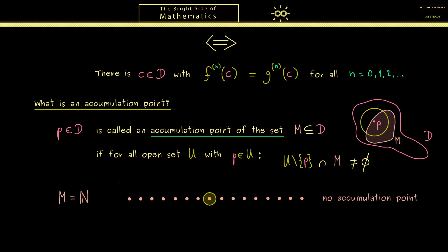However, it can happen that such a discrete set has accumulation points. For example, the set 1/n accumulates around the point 0. This means the point 0 is an accumulation point of the set M. Please note that 0 is not an element of the set M itself, but still it is an accumulation point of the set by this definition.